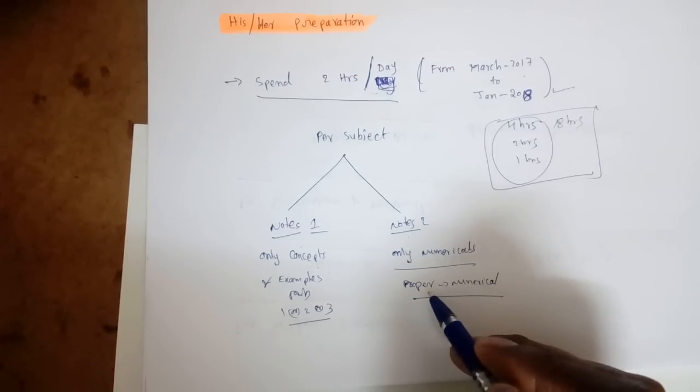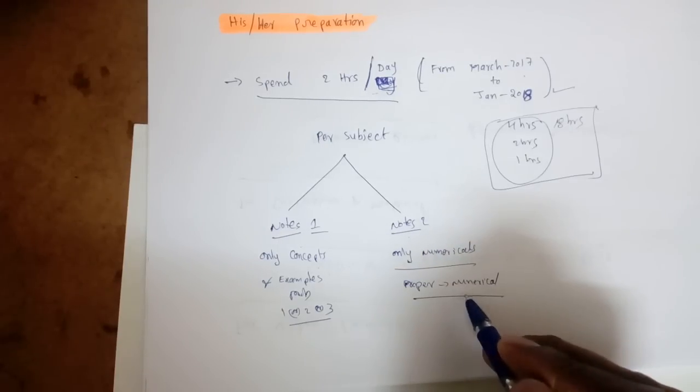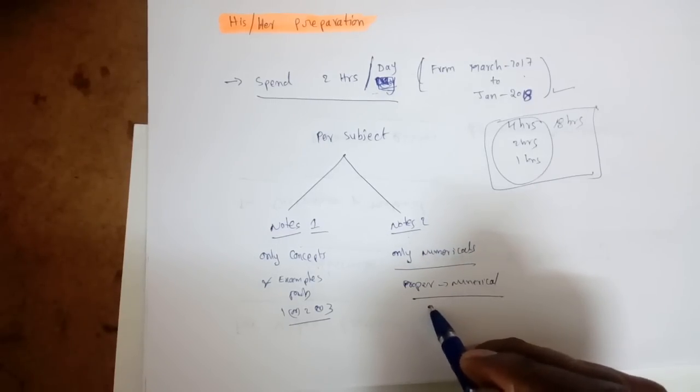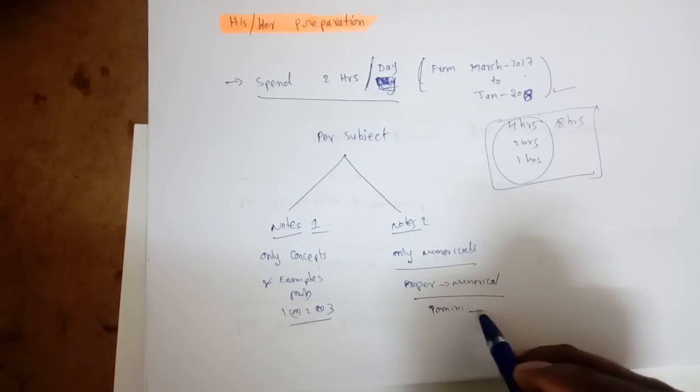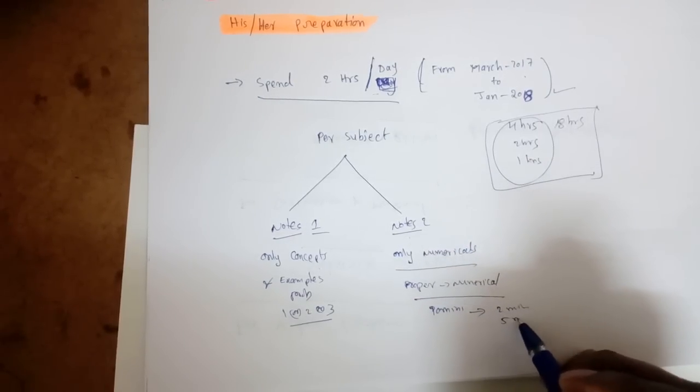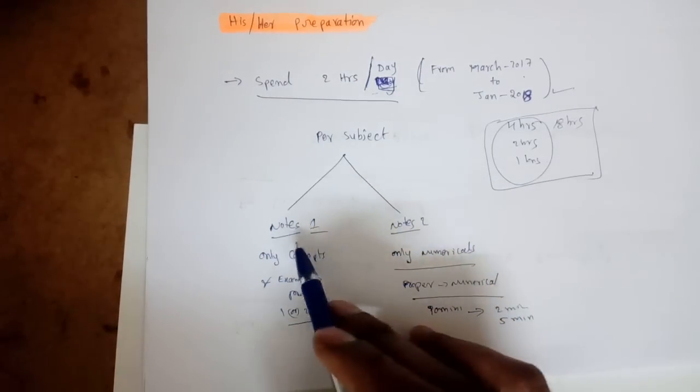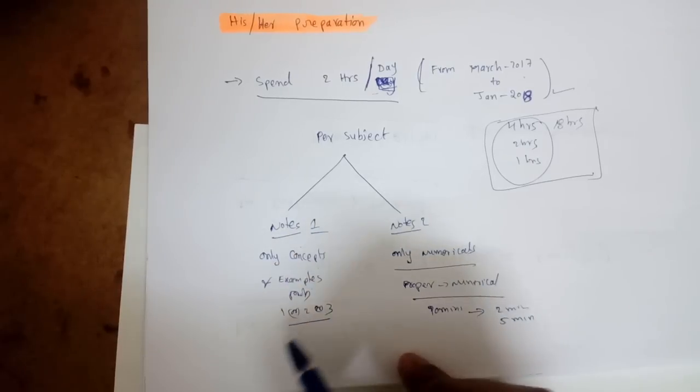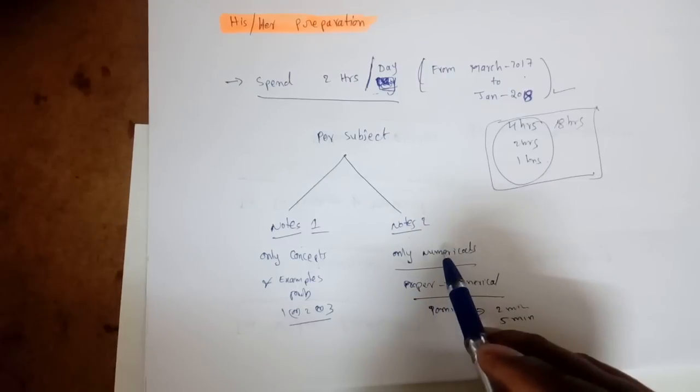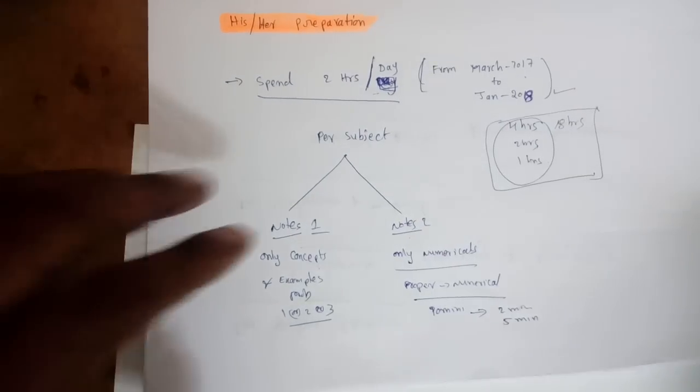It's not like we have to go only for numericals. Sometimes you will see how we can make better ways. Suppose when we do numerical, if you are taking ten minutes solving, how to decrease the time to two minutes or five minutes once we know all the concepts. That's why maintain two notes for everyone.